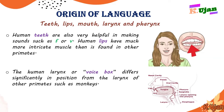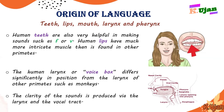The human larynx, or voice box, differs significantly in position from the larynx of other primates such as monkeys. Monkeys and other animals don't have this complex structure — the voice box or vocal cords — which are only found in human beings. Just because of these features, humans are able to make speech. The clarity of sounds is produced via the larynx and the vocal tract.